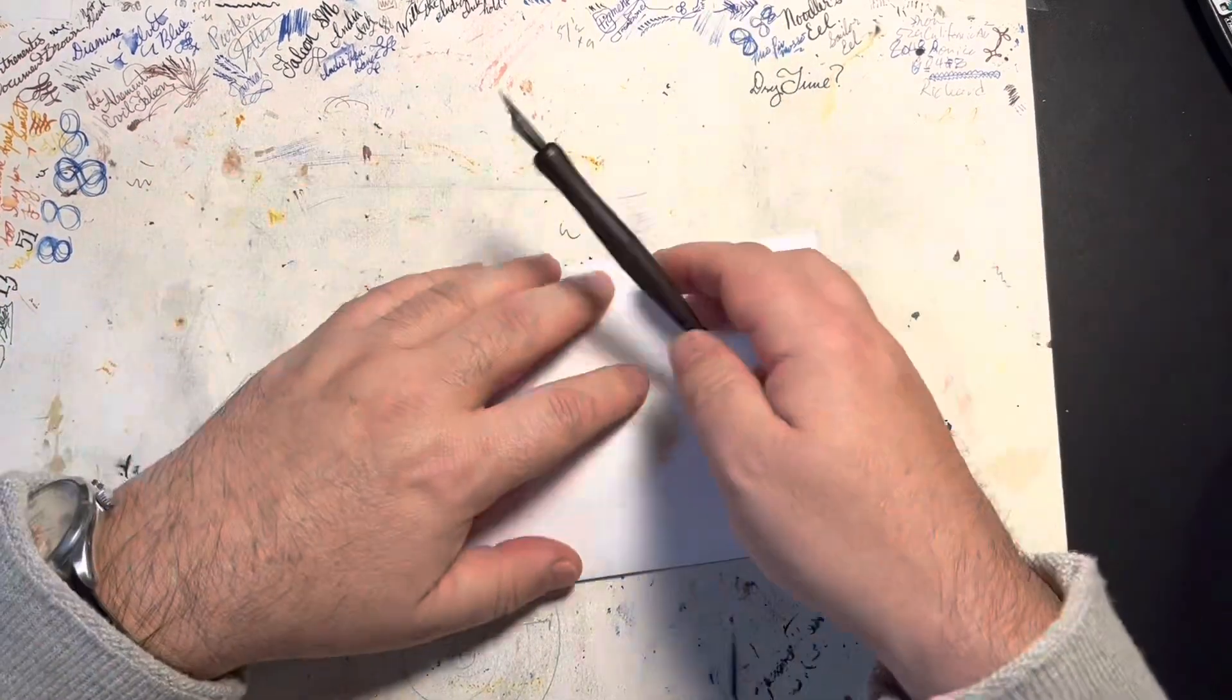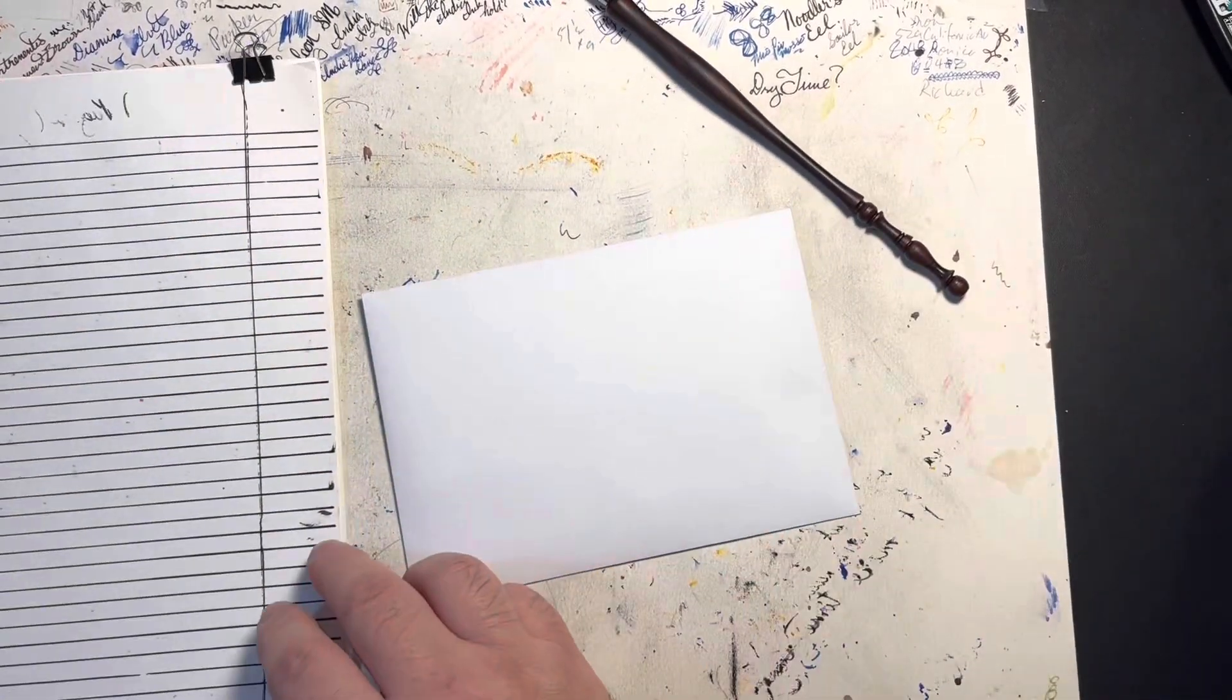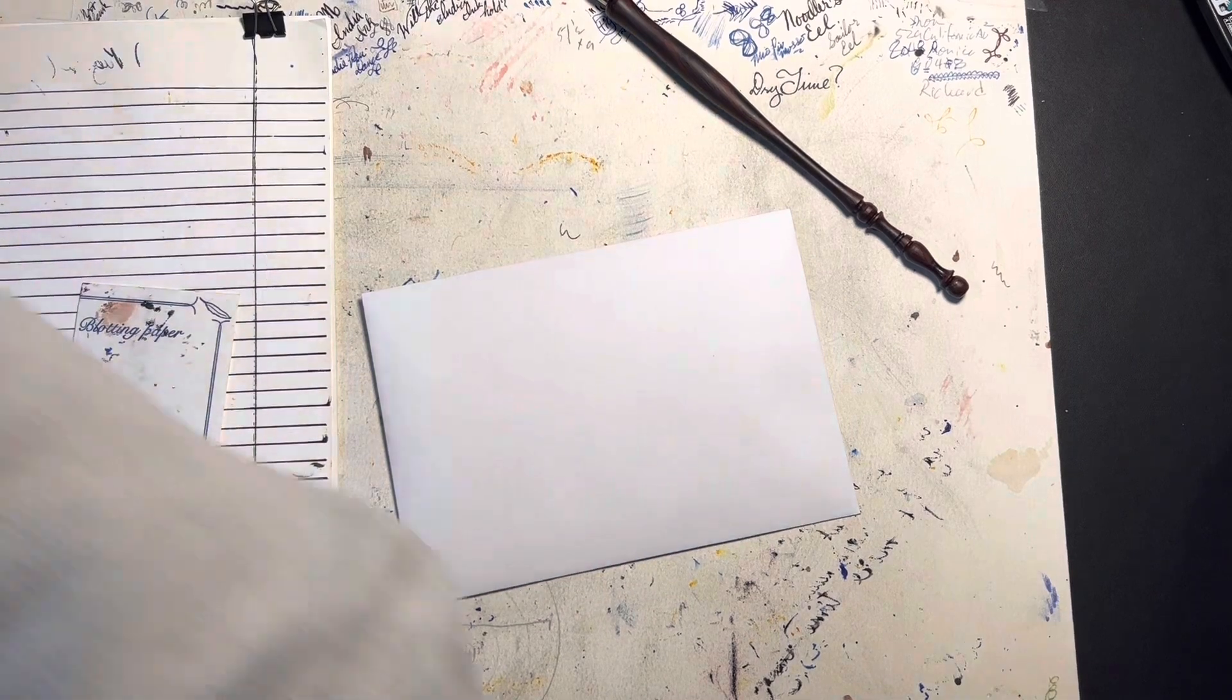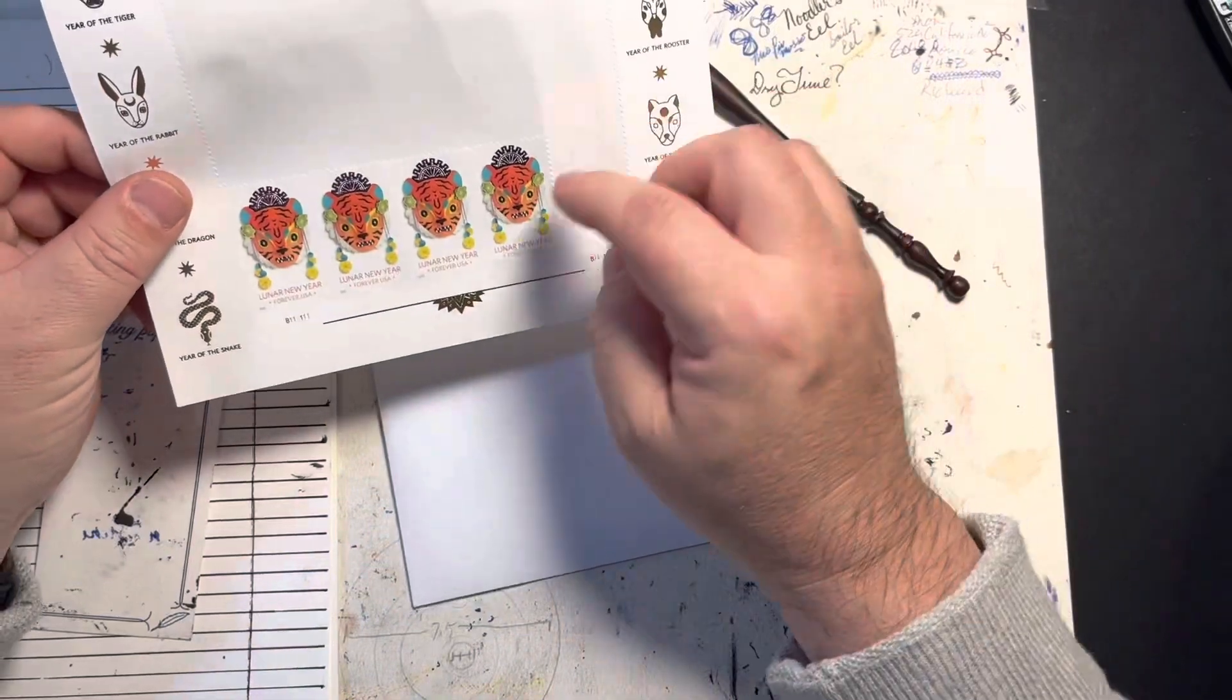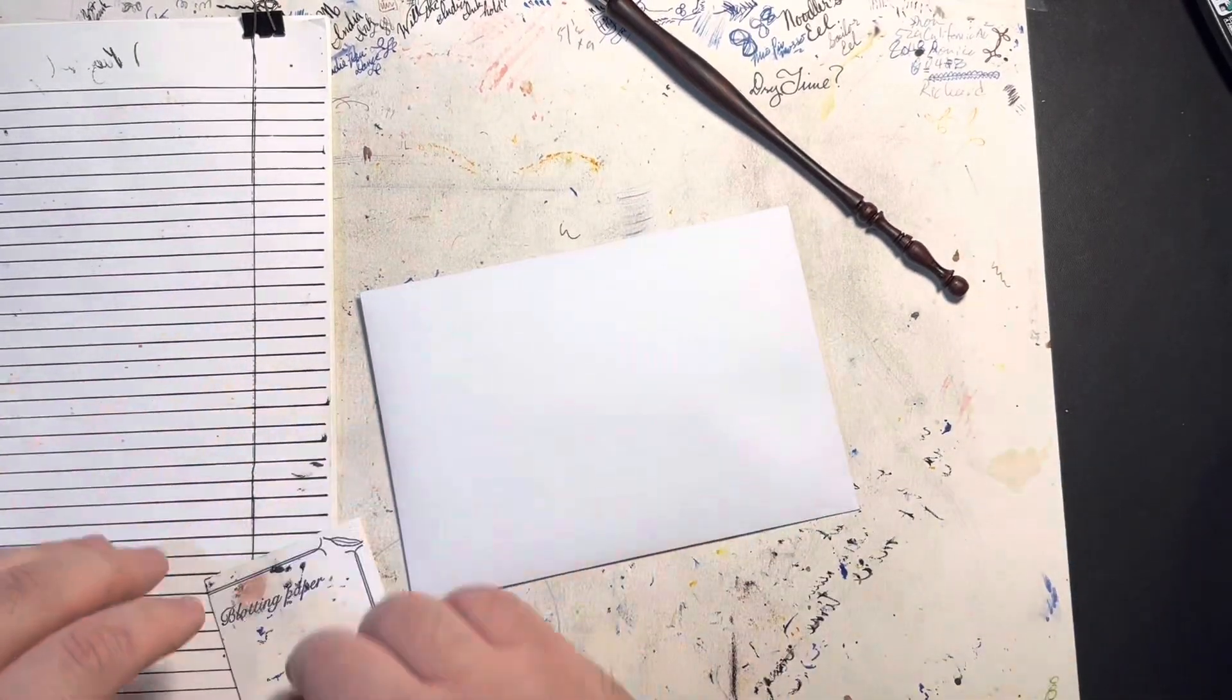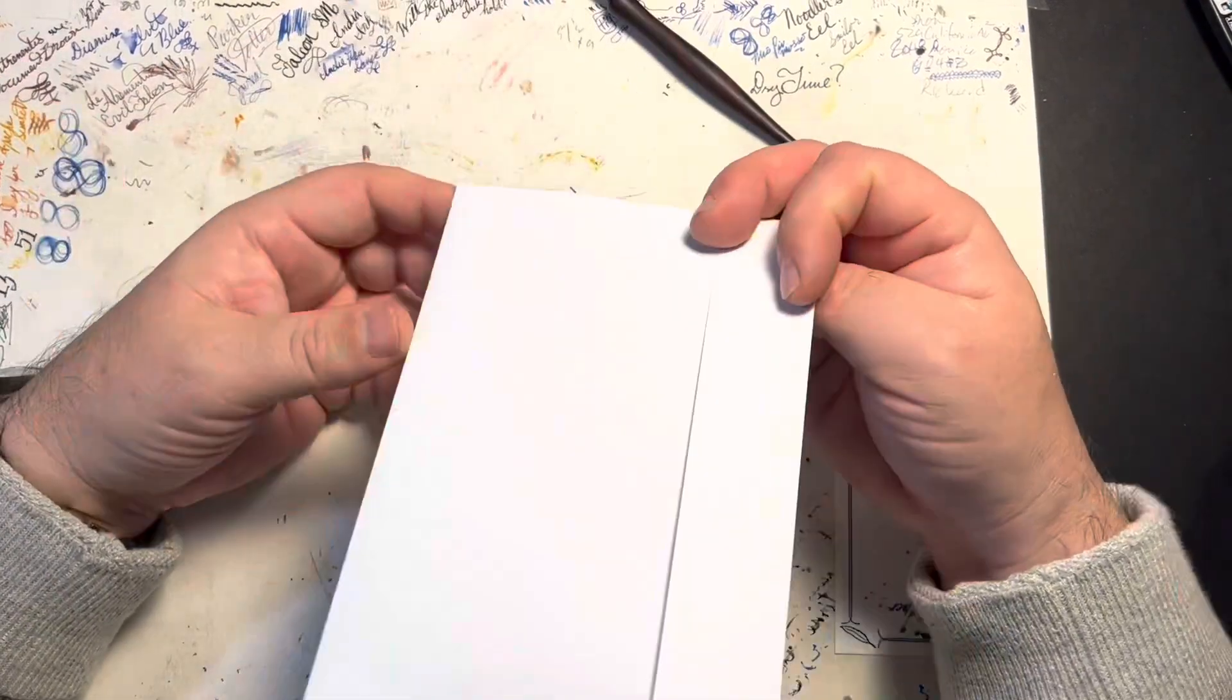And because I like to use permanent inks, I will use my dip pen to address my letter. And then I will have to get back in my box here, so I can get my trusty Chinese New Year's stamps out. My mother was born in the year of the tiger. So I have a couple left. Just enough to get me to this next Chinese New Year. And that's how I do my letters.